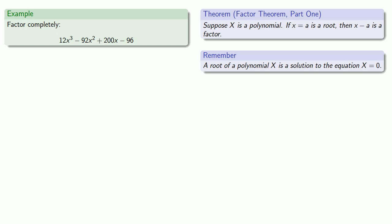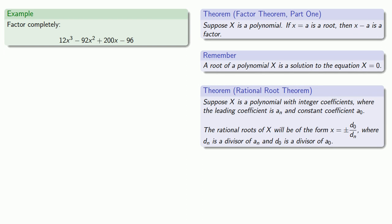Now, in general, finding the root of a polynomial is hard, but we only care about the rational roots because they lead to the rational factors. And so we can use the rational root theorem, which tells us that those rational roots will be of the form a divisor of the constant over a divisor of the leading coefficient.